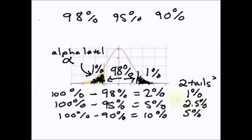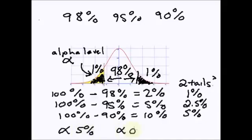I have written alpha levels here as percentages, however it is usual to write them as decimals. For example, you would write an alpha level of 5% as 0.05. I used percentages here as it is easier to understand what a percentage of a curve is, as opposed to just saying 0.05. That is how to calculate alpha levels.